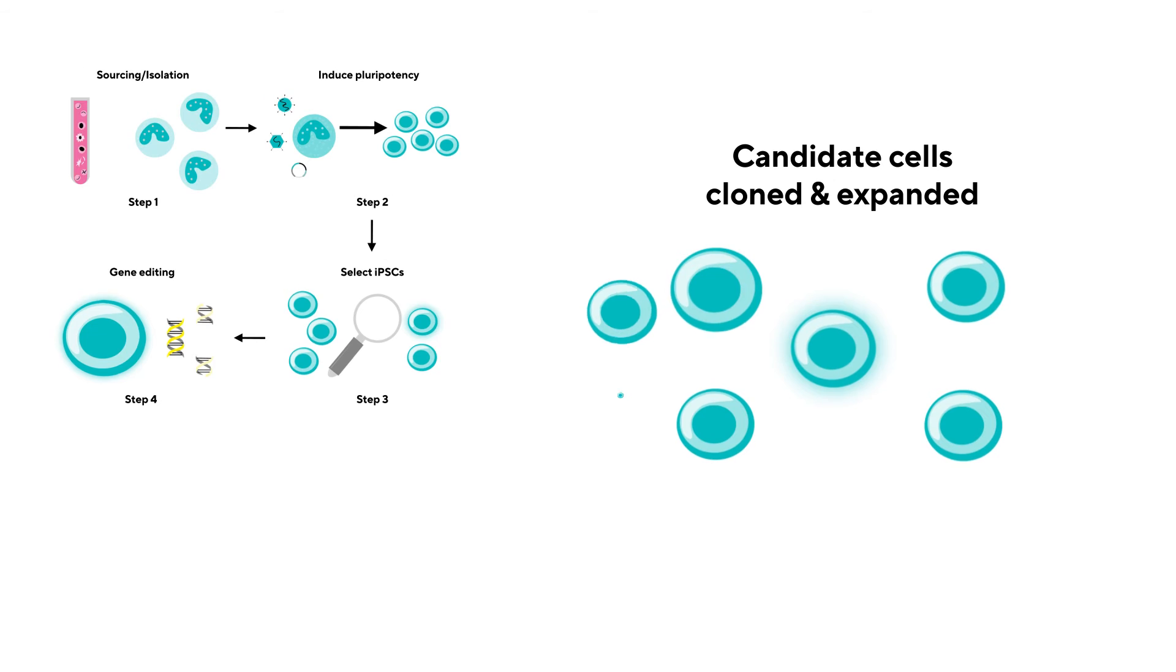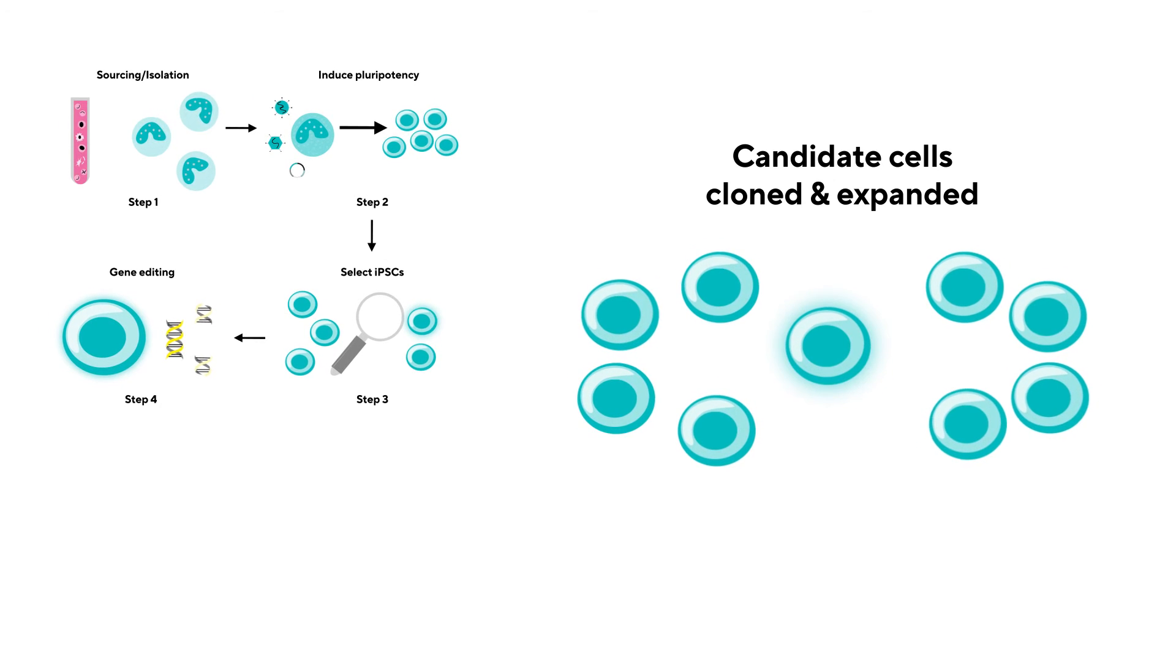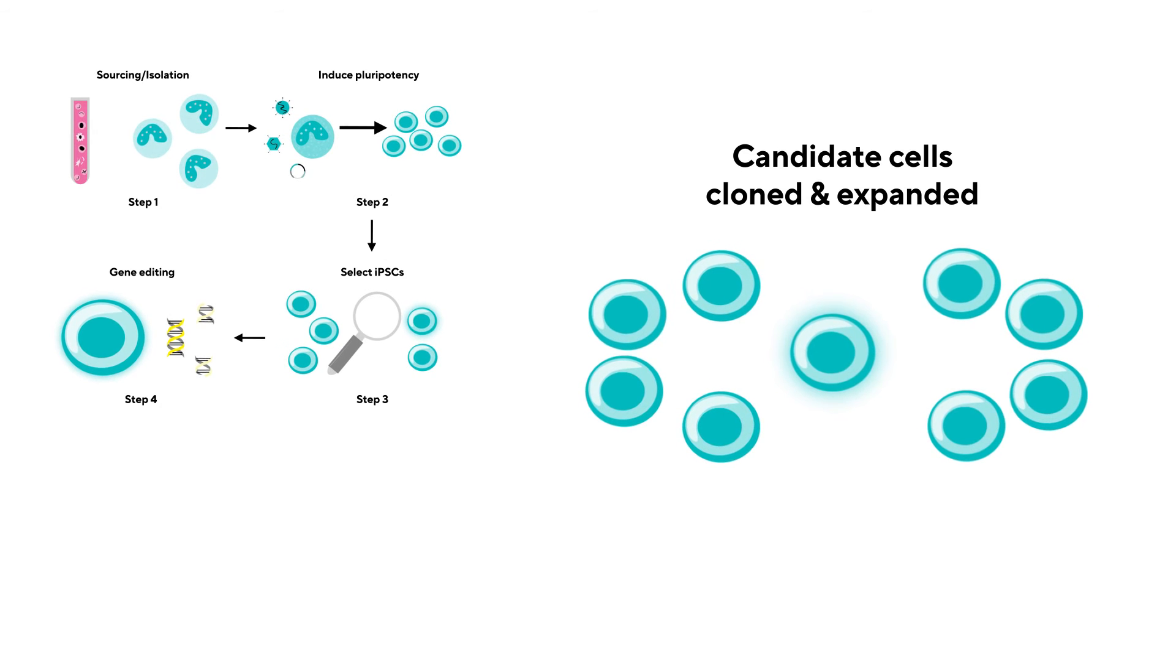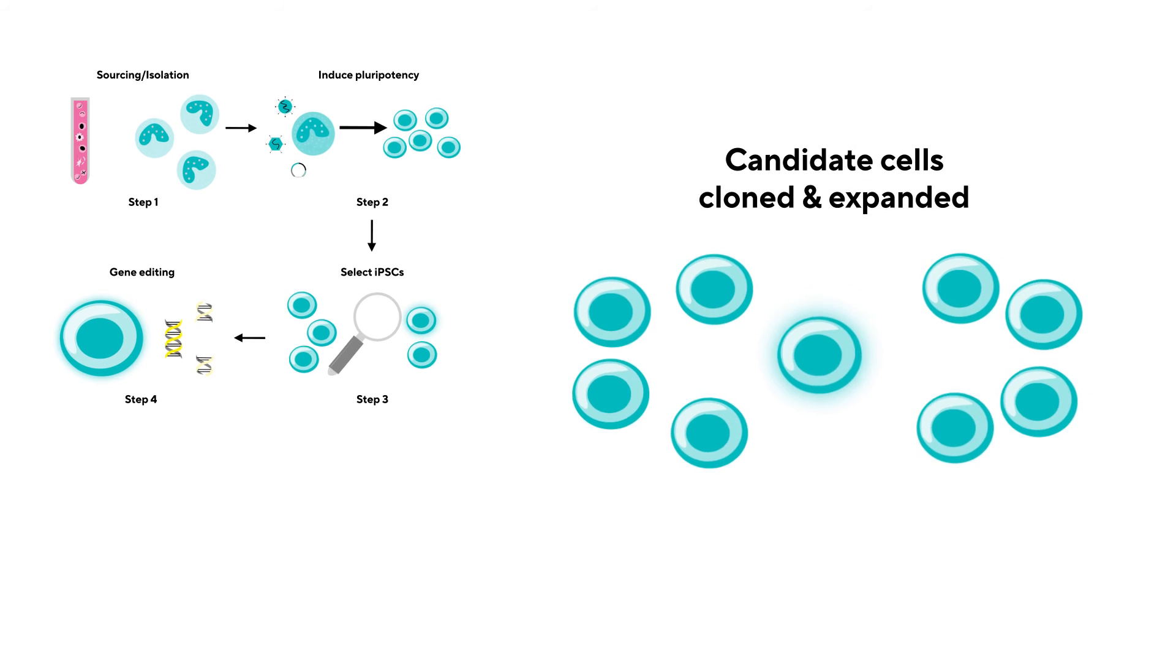Candidate cells cloned and expanded. The first expansion step is then required to obtain a sufficient supply of your iPSCs for manufacturing, while constantly checking for consistent marker expression.